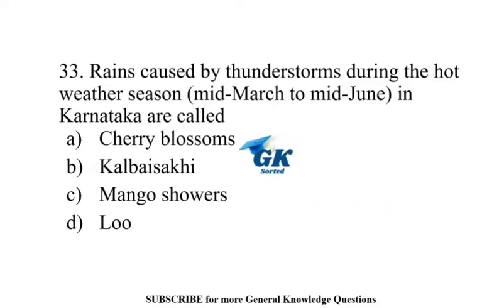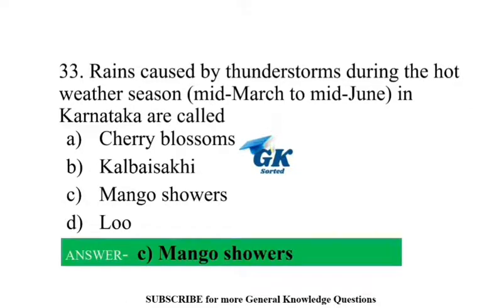Summer rains caused by thunderstorms during the hot weather season — mid-March to mid-June — in Karnataka are called mango showers.